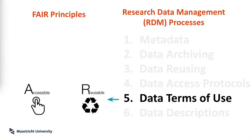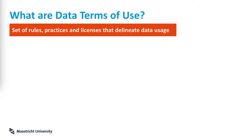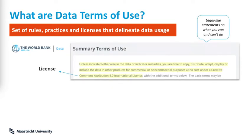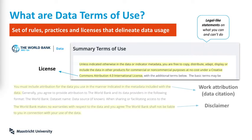Next are data terms of use, which make data accessible and reusable. So what are the data terms of use? They are a set of rules, practices, and licenses that delineate data usage — in other words, legal-like statements on what you can or can't do with the data. Take the World Bank data terms of use, for example — it declares a Creative Commons license that says you are free to copy, distribute data, etc. In general, terms of use also include a request for work attribution, like citing your data, and sometimes disclaimers. You have to ask yourself: will anyone get harmed if the data is misused? Do I want to disclose something?